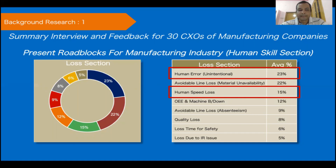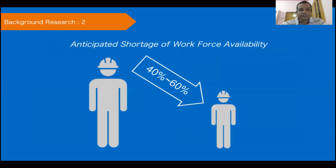The second research covers the anticipated shortage of workforce availability after the global pandemic. It is expected that there would be a reduction of 40 to 50% in availability, as many workers and operators in the shop floor have gone back to their hometowns, with limited chances of returning for at least another three to four months.